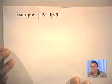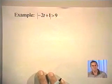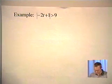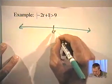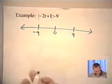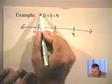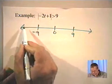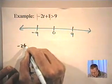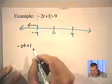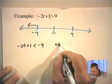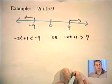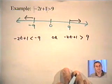Let's try one more. I encourage you to always think about absolute value problems in terms of distance — it makes much more sense that way. The absolute value of negative 2t plus 1 must be more than 9 units away from 0. For this number to be more than 9 units away, it must live in one of the outer intervals. So again, we get two inequalities: negative 2t plus 1 can be less than negative 9, or negative 2t plus 1 can be greater than 9.